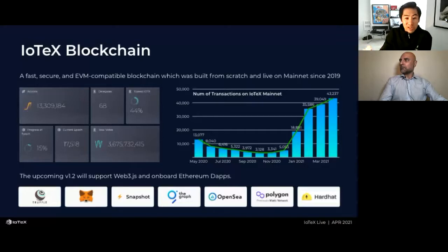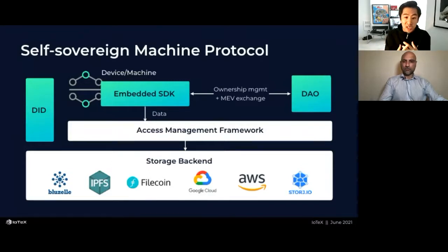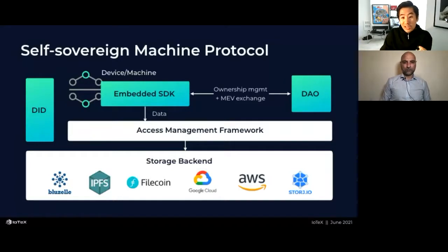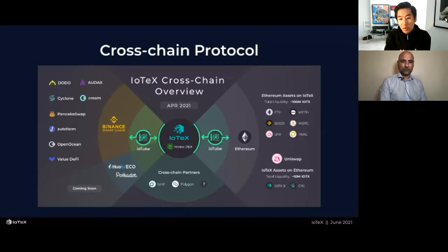Simone's going to dive much more into the different toolsets that builders can leverage on our blockchain. We've also built a self-sovereign machine protocol: how do you give devices an identity? How do you allow them to interoperate? The foundation is identity and the ability for devices to trust each other. We have a bounty related to the Pebble Tracker device where you can own your data, simulate data sets, and plug them into decentralized applications. IOTEX is a layer one blockchain, EVM compatible, built from scratch — no forks.